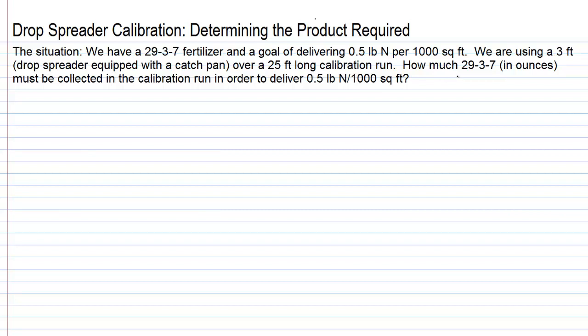So the question is, how much 29-3-7 in ounces must be collected in the calibration run in order to deliver a target of a half pound of nitrogen per 1,000 square feet?